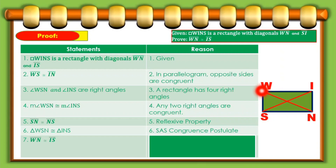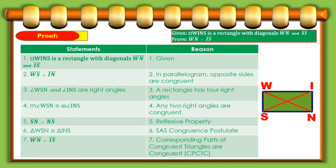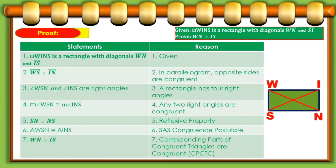In that way, we have proven that segment WN and segment IS are congruent, by CPCTC — corresponding parts of congruent triangles are congruent. There you go. Thank you so much for listening and I hope that you've learned from this topic today and you can use it in your respective classes. Once again, thank you for listening. God bless everyone.